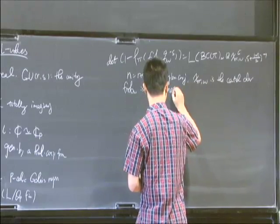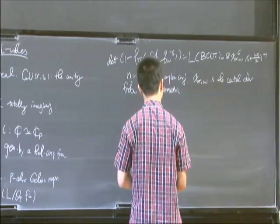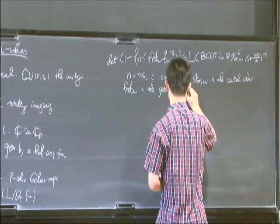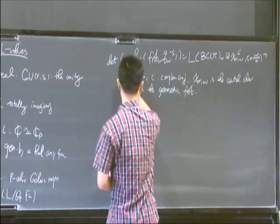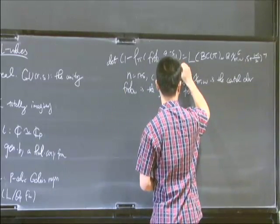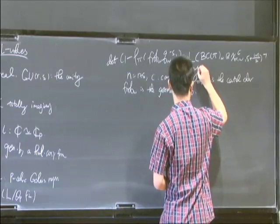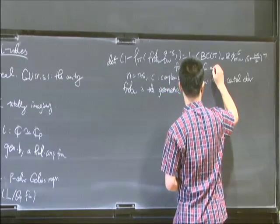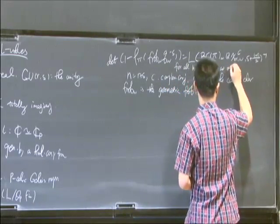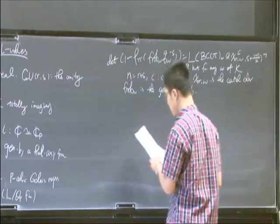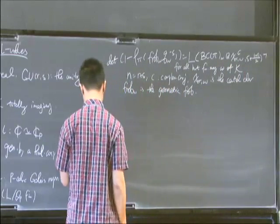I should also mention that the Frobenius here is the geometric Frobenius, different from the convention in the literature. This is for all but finitely many primes W of K. This is uniquely determined.